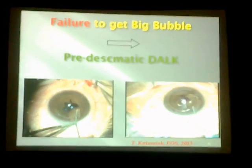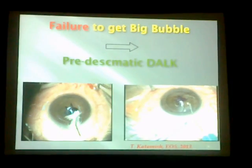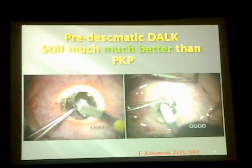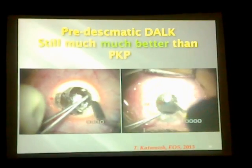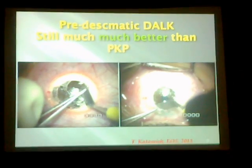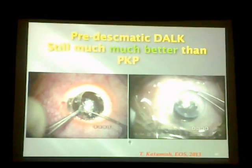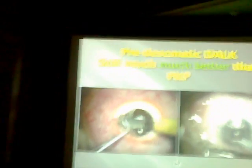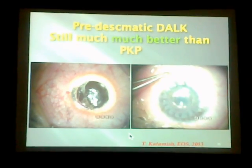Sometimes, if we fail to obtain the big bubble, we can continue the case with manual dissection to achieve what is called pre-Descemet's DALK. Pre-Descemet's DALK, in my opinion, is still much better than PKP, because we have all the advantages of DALK. The only drawback is the rough interface, but the great advantage of being an extra-ocular procedure with a preserved endothelium outweighs the slight decline in visual acuity.